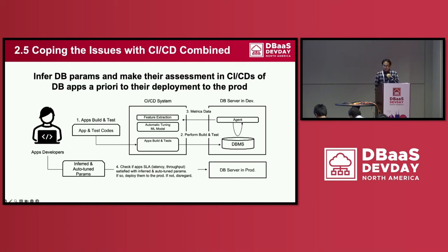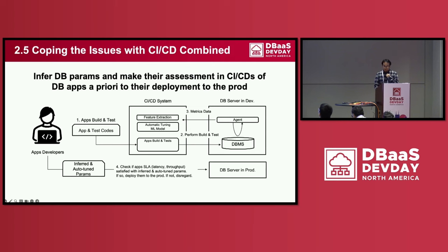To cope with this issue, we came up with the idea to autotune DB parameters with machine learning but perform risk assessment in the CI/CD pipeline before deploying them to the production environment. We integrate machine learning models into the CI/CD system and collect metrics from the DB server in the dev environment while tests and application builds are being run in the CI/CD pipeline. At the end of the CI/CD pipeline, application developers can check whether the SLA or performance requirement is met with the tuning result, and then decide whether to deploy the inference result to the production environment.